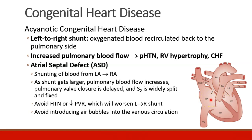As the shunt gets larger and larger, pulmonary blood flow starts to increase, and the pulmonary valve closure is delayed, so these patients may have a very widely split and fixed S2. These patients don't want to have hypertension or increased peripheral vascular resistance because that increases pressures on the left side, which will increase the shunting back to the right side.